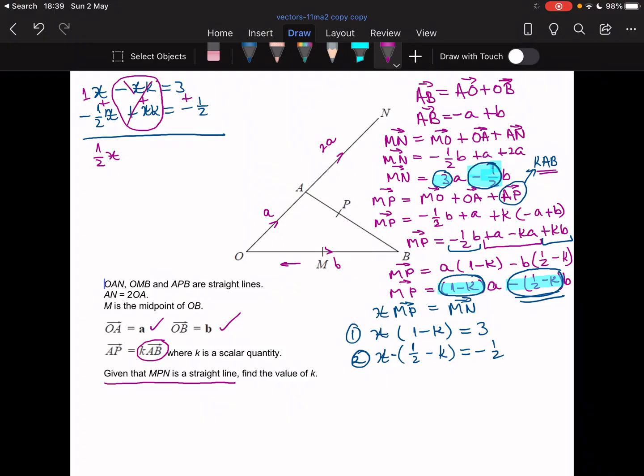These ones cancel out. That's why we did it. And then 3 plus minus, that means it's 3 minus. So 3 minus a half is 2.5. I'm going to write it as a fraction, so 2.5 is the same as 5 over 2.